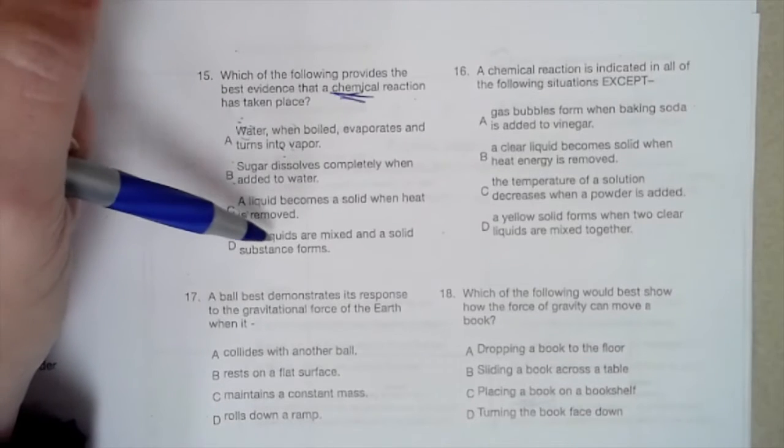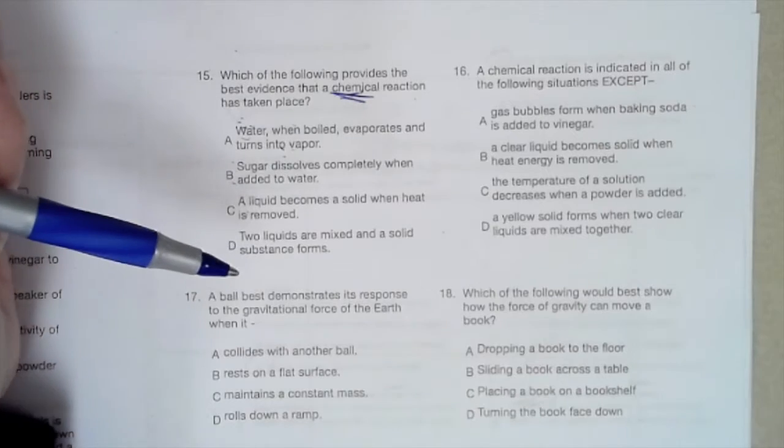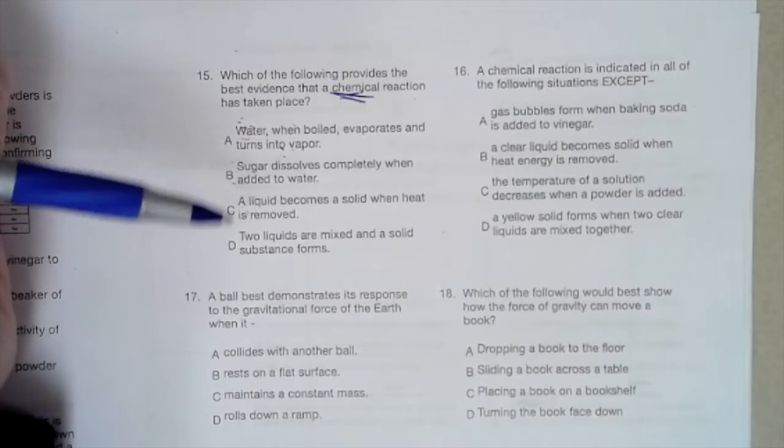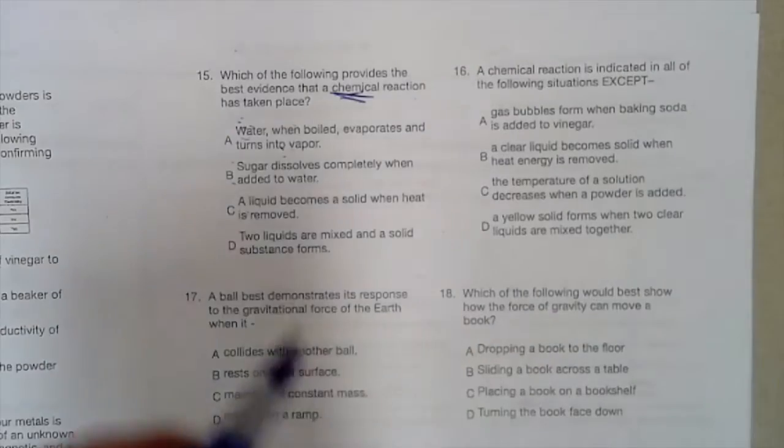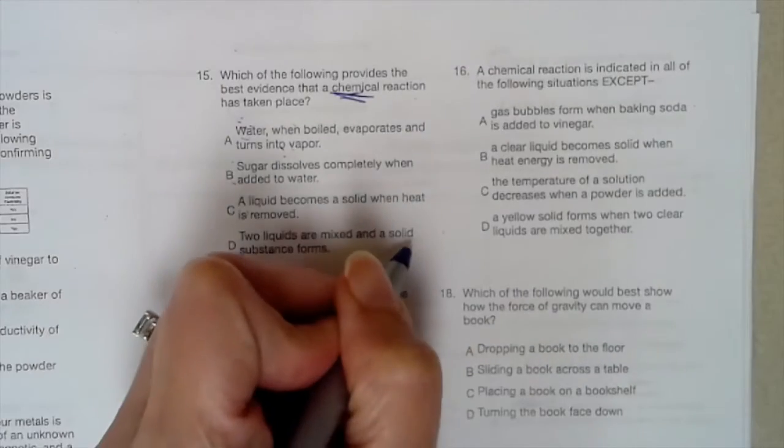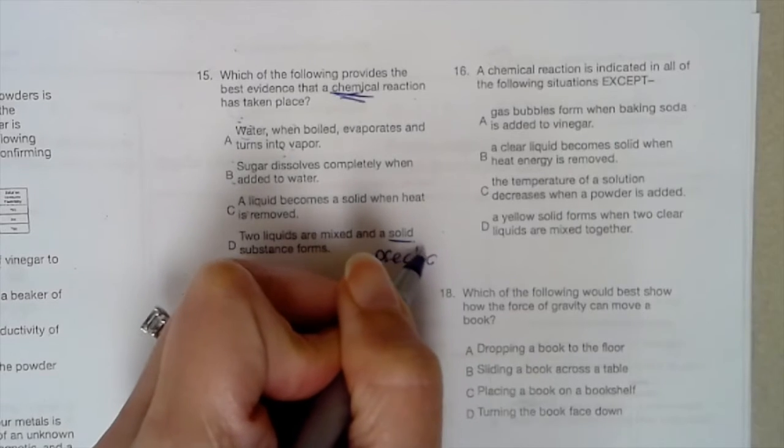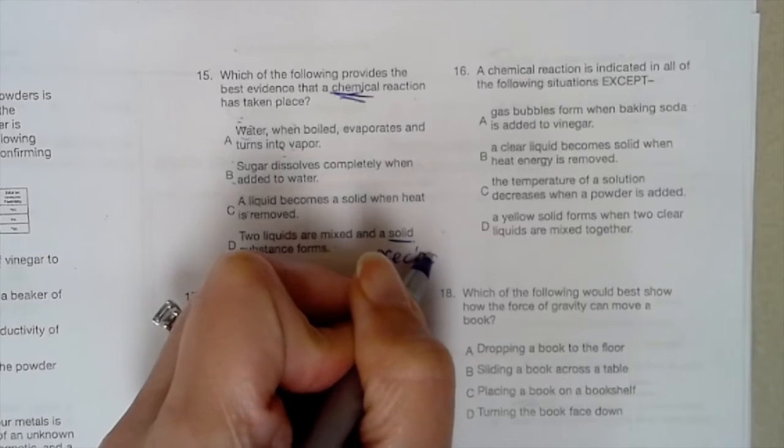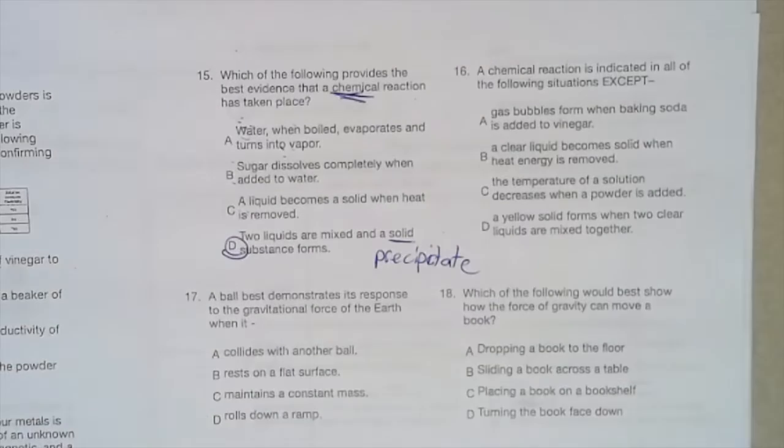Two liquids are mixed and a solid substance forms. That is an example of a chemical change. Remember when we mixed vinegar and milk and we had white chunky stuff? The solid that's formed is called a precipitate. That was the white chunky stuff that we got when we mixed the vinegar and the milk together.